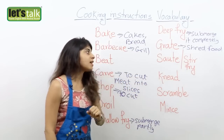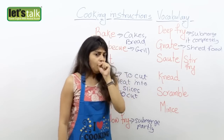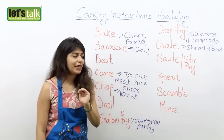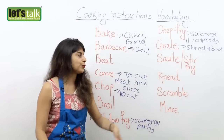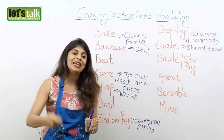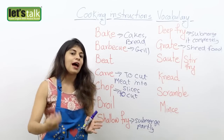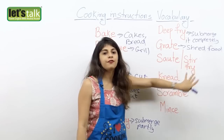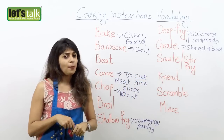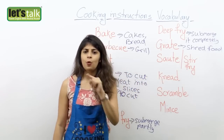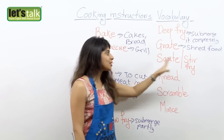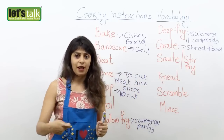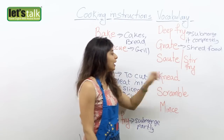Now the next one here is sauté or stir fry. Sauté or stir fry means you put your veggies or probably meat in a hot pan where you add a little oil, and you sauté the veggies or the meat quickly on heat. So that's called sauté or stir fry. Extremely healthy — probably you can sauté or stir fry your veggies every night and that should be your dinner. Trust me, it's extremely healthy. So that's what sauté or stir fry means: when you mix it in your frying pan with a little bit of oil.